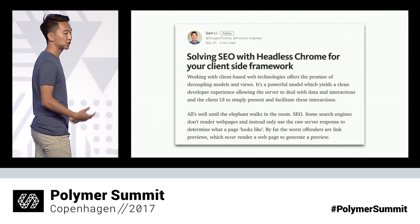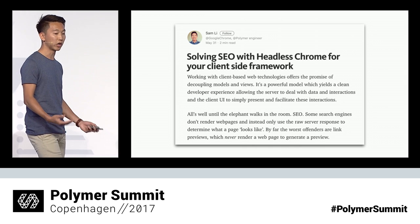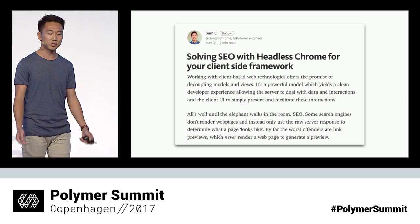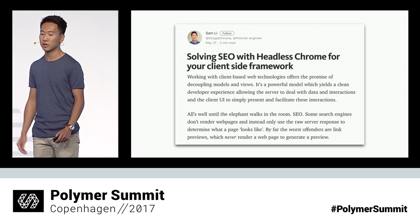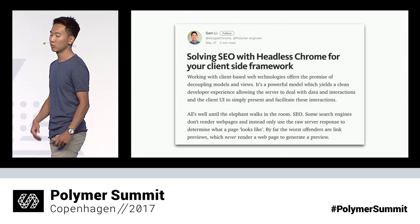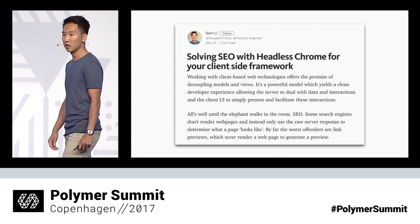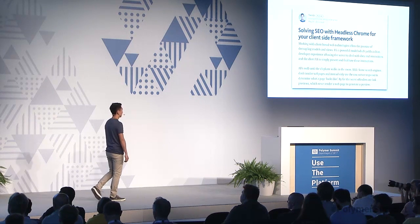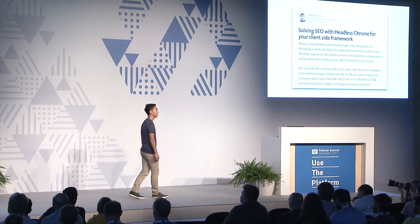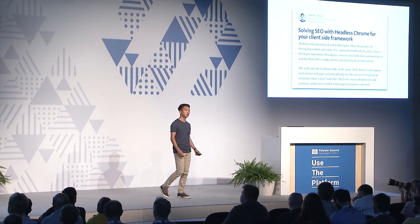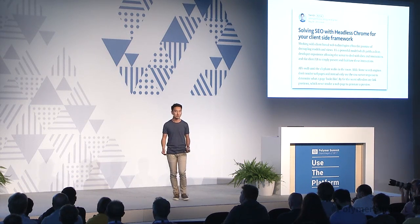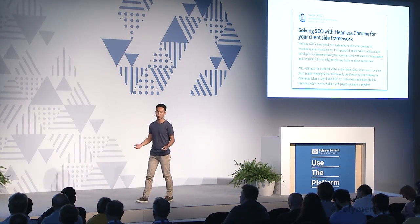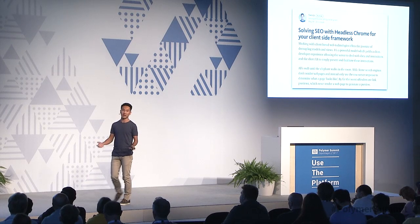So I built a proof of concept of this approach for webcomponents.org, and it worked. I wrote a Medium post about it, and people were really interested in this approach and wanted to see more of it. So based on this response, I eventually decided that instead of my hacky solution, I would build it properly. But then came the most challenging part of any project — and I know you've all experienced it as well: naming.